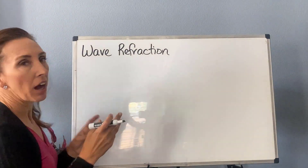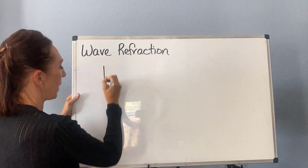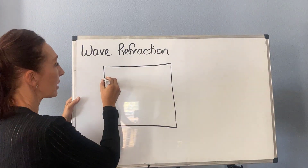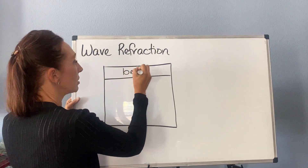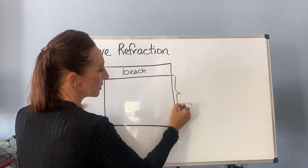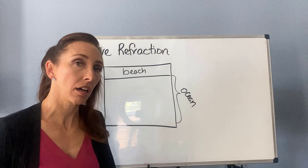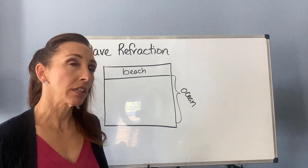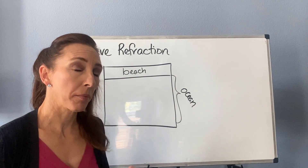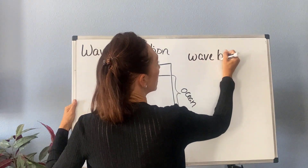I'm going to use a map view. We often use cross-section or side views in geology, but this is actually going to be a map view. Before we can really discuss this, we need to talk about the particular depth at which the wave starts to interact with the bottom of the ocean. It's called the wave base. So let's talk about wave base really briefly.